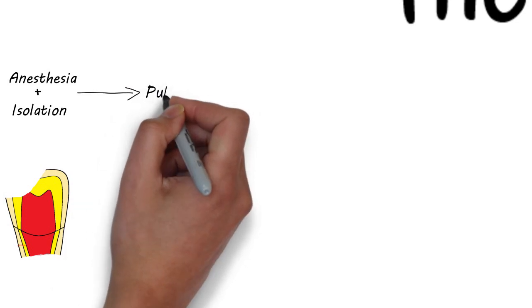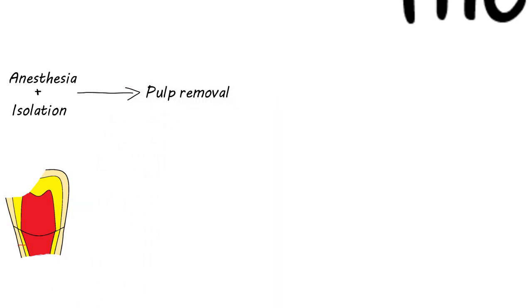After successful anesthesia and isolation of the tooth, the inflamed or damaged tissue is removed. There are two ways to remove the pulp.